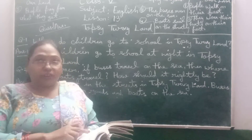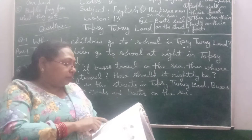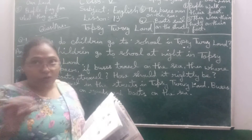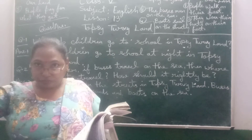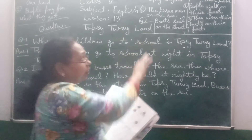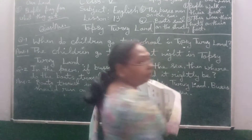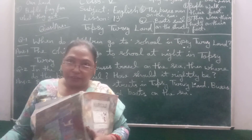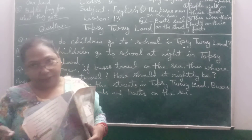First, here is Topsy Turvy Land — what is there? The sentence given here is: people walk on their heads in Topsy Turvy Land. But in our land, people walk on their feet. This is the first difference between Topsy Turvy Land and our land.